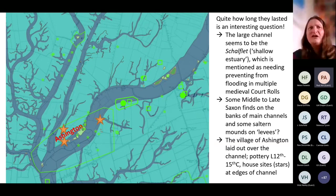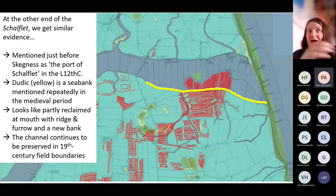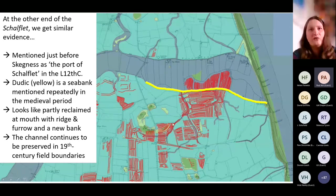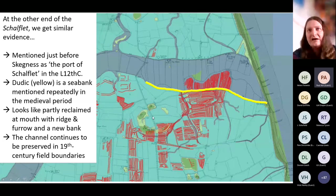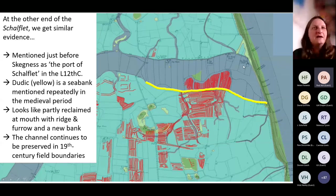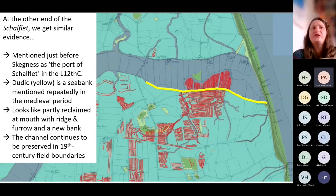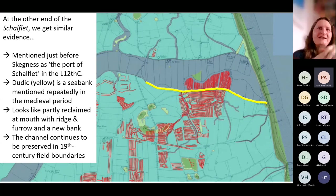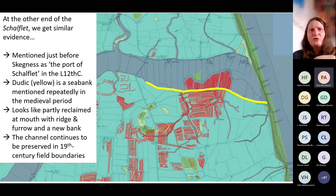We definitely have these major channels having significant marine activity into the 12th century. At the other end of the Shalfleet we get similar evidence. Between Chapel St Leonard's in the north and Adelthorpe — a previously unmechanised till island with a medieval and early modern hall on it — and Inghamo's just to the south, the mouth of the Shalfleet is about 400 metres wide. A feature called Dudik is mentioned in the 12th to early 15th century as a seabank, but it's a very odd seabank because it runs not parallel to the modern coast but directly inland, suggesting a definite need for a seabank in that period, with work constantly done to maintain it through the 12th to 14th centuries.